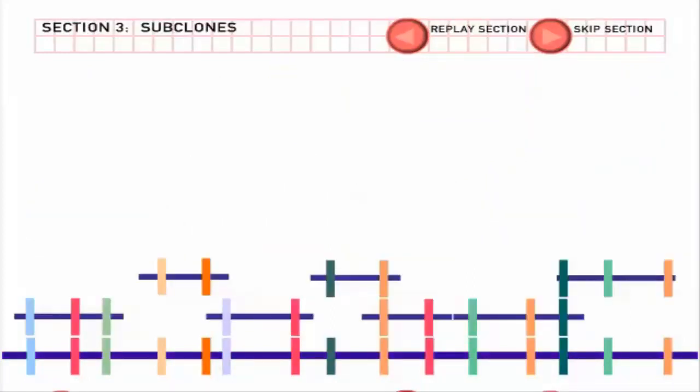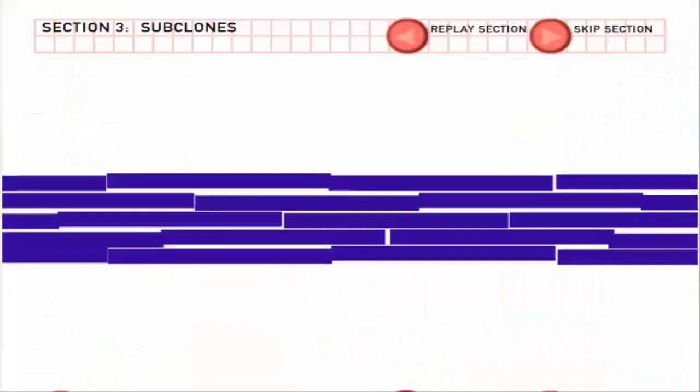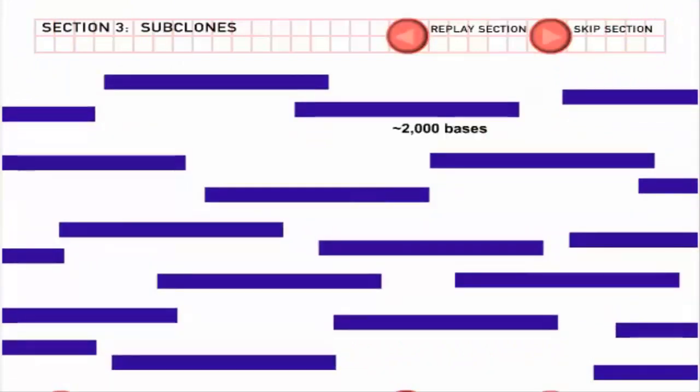To sequence the human genome, Human Genome Project scientists cut relatively large clones called BACs, which are 100,000 to 200,000 bases long, into smaller fragments.